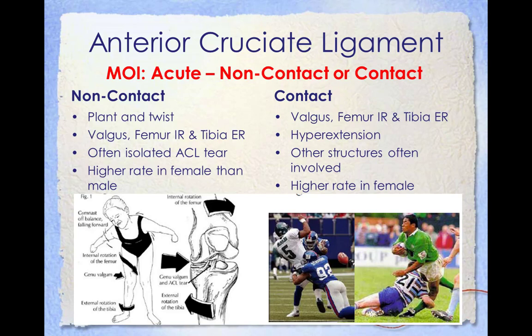Anterior cruciate ligament injuries have two mechanisms: contact and non-contact. A non-contact ACL injury occurs from a plant and twist, such as a cleated foot stuck in turf when changing directions, with a valgus force on the knee, femur internal rotation, and tibia external rotation, often resulting in an isolated ACL tear. Non-contact ACL injuries are 6 to 10 times more common in female athletes than males in the same sport. Contact ACL injuries occur from a valgus force where the femur internally rotates and the tibia externally rotates, or the knee hyperextends during contact, often resulting in injury to more than just the ACL. Contact injuries are also more common in female athletes.